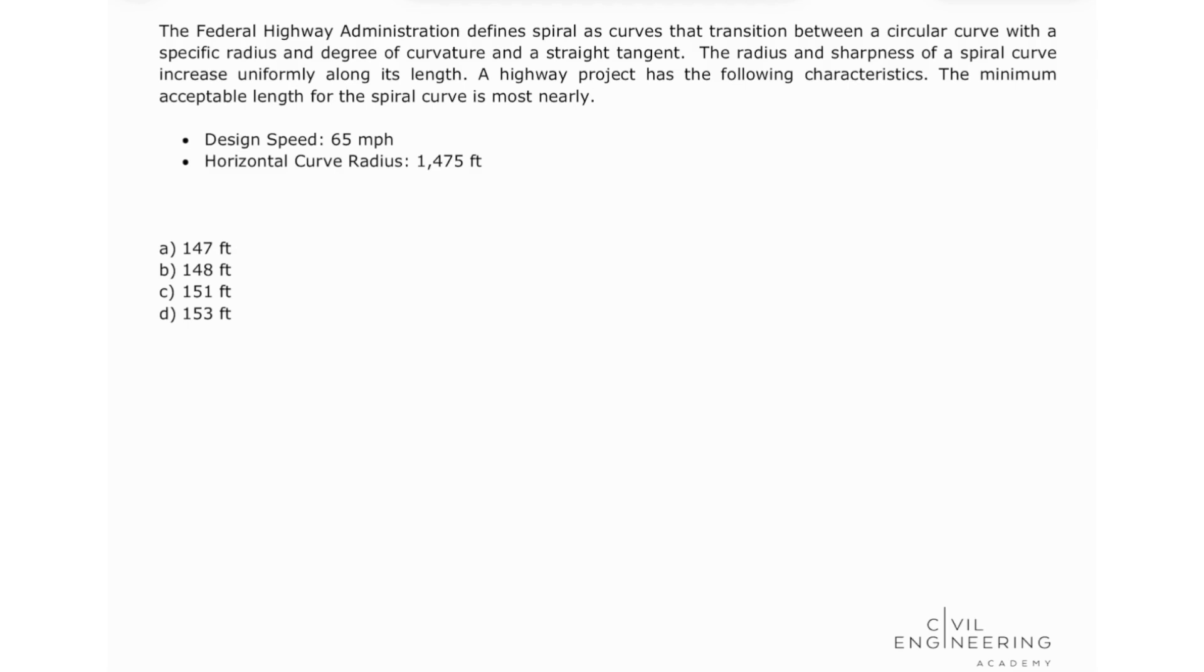The minimum acceptable length for the spiral curve is most nearly - given the design speed of 65 miles per hour, horizontal curve radius 1475 feet.